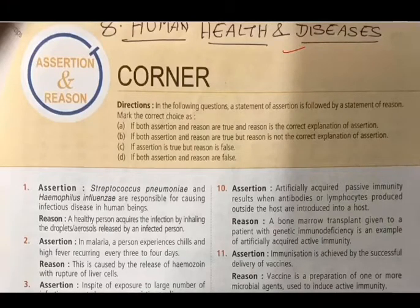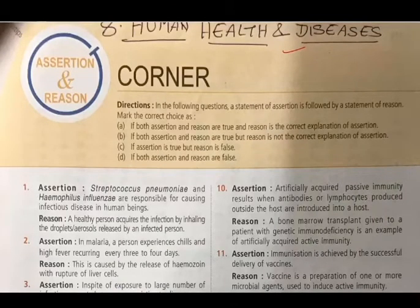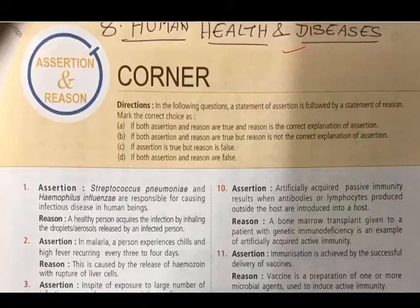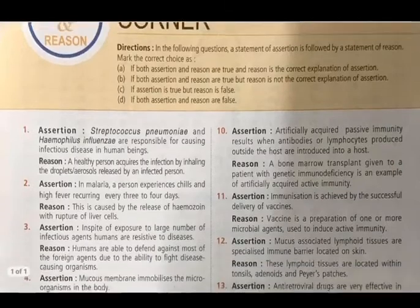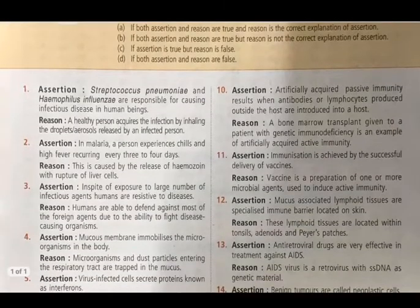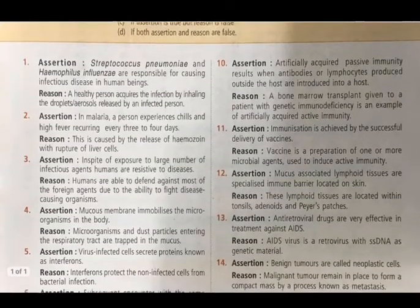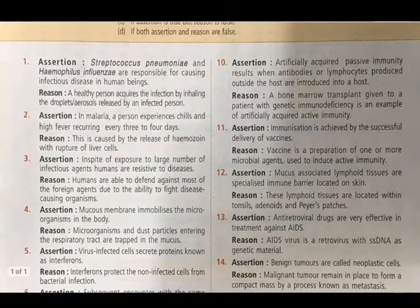The directions are: Answer A if both assertion and reason are true and reason is the correct explanation of assertion. Answer B if both are true but reason is not the correct explanation. Answer C if assertion is true but reason is false. Answer D if both assertion and reason are false.